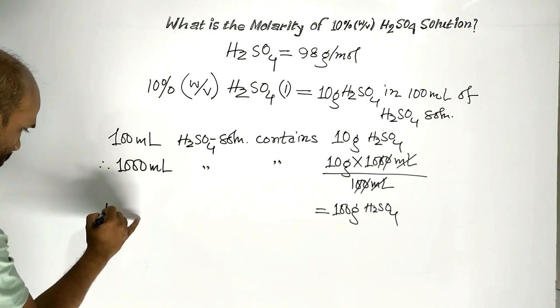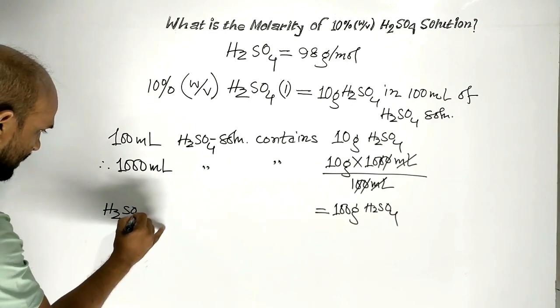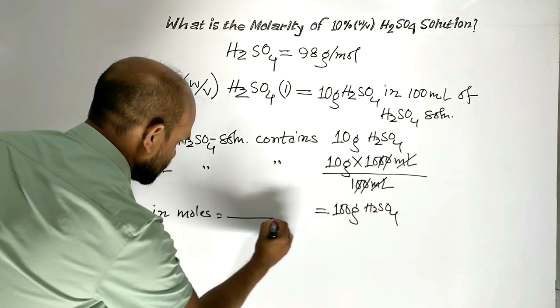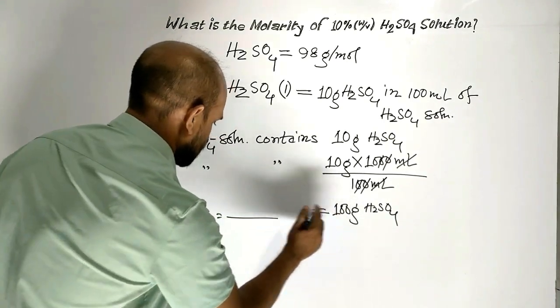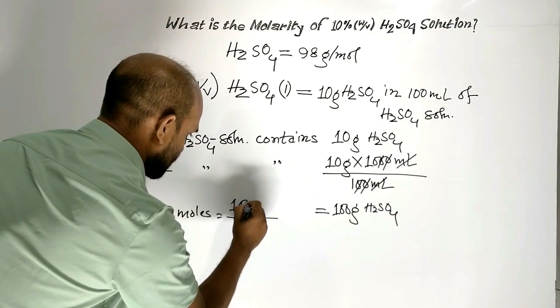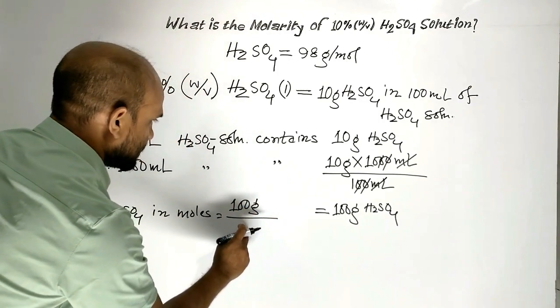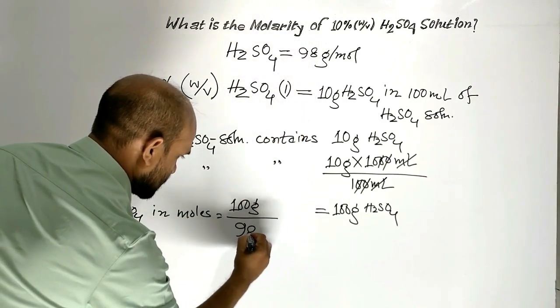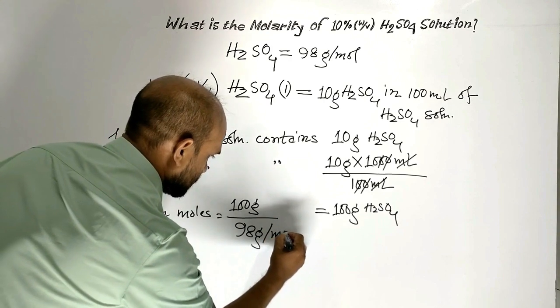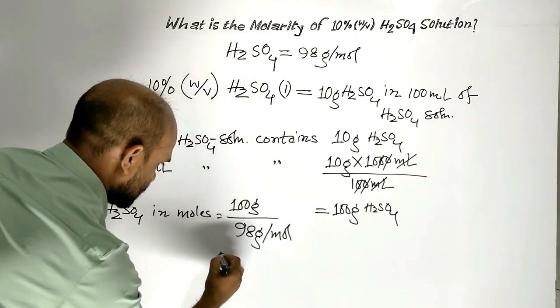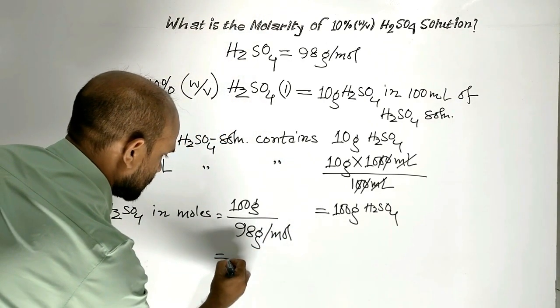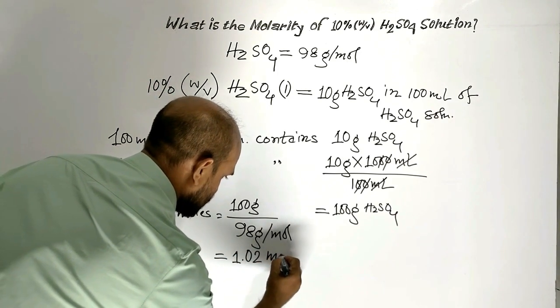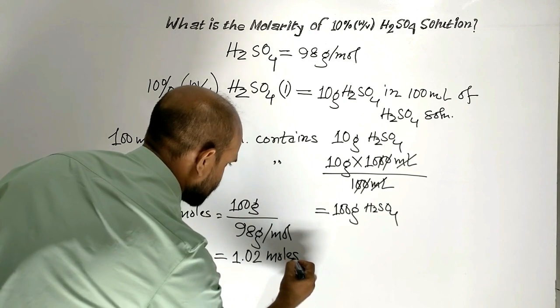Now, sulfuric acid in moles: we get the given mass, that is 100 grams sulfuric acid, divided by the molar mass of sulfuric acid, 98 grams per mole. This equals 1.02 moles.